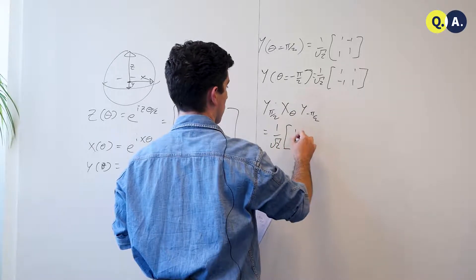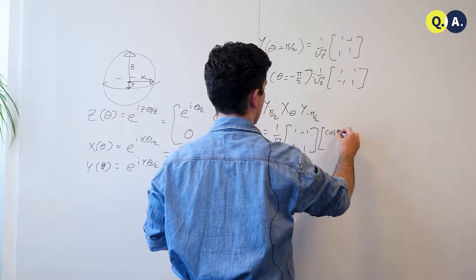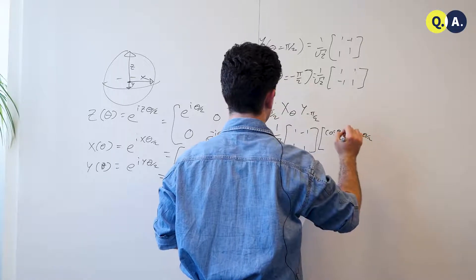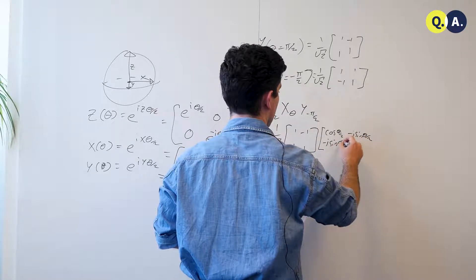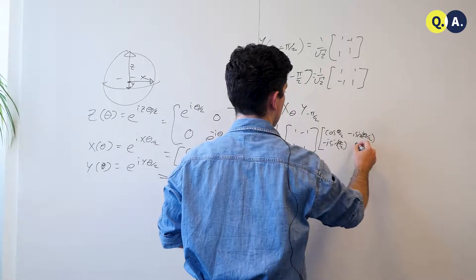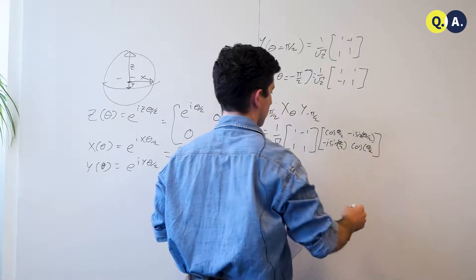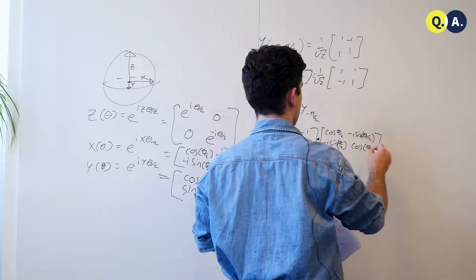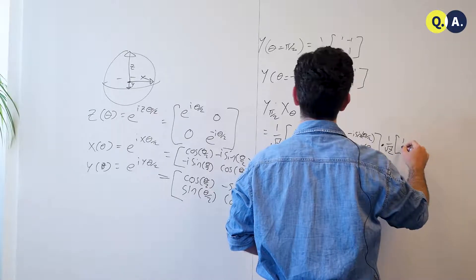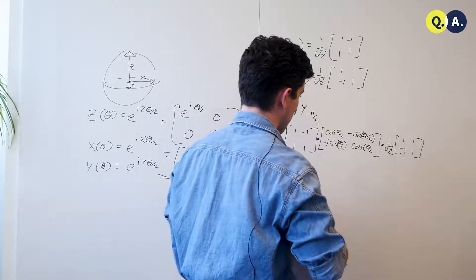1, 1, minus 1, 1, cosine of theta over 2, minus i sine theta over 2, minus i sine theta over 2, cosine of theta over 2. So, then we have another 1 over root 2, 1, minus 1, 1, 1. We multiply these through.